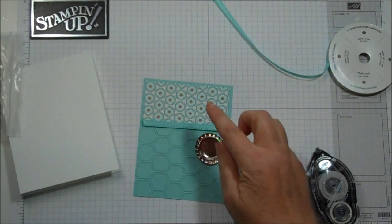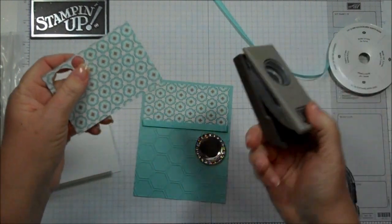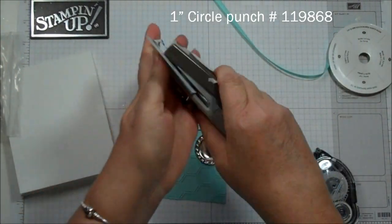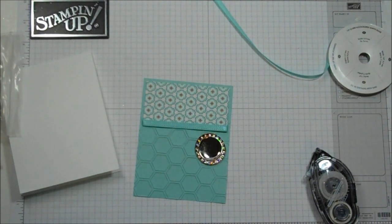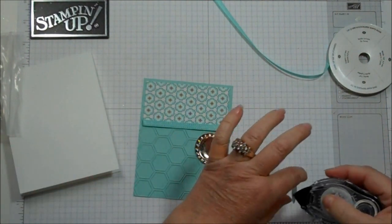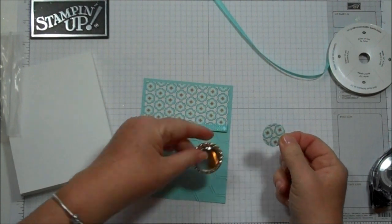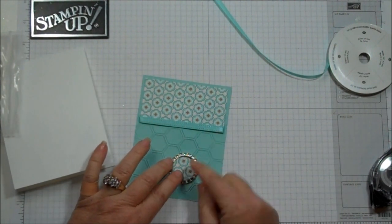Okay, so now for the Pop-Top, we're going to take the same designer paper. I'm going to use the 1-inch circle punch. Put some adhesive on the back side of that. Then set that right inside. Oh, the Pop-Top fits perfect.